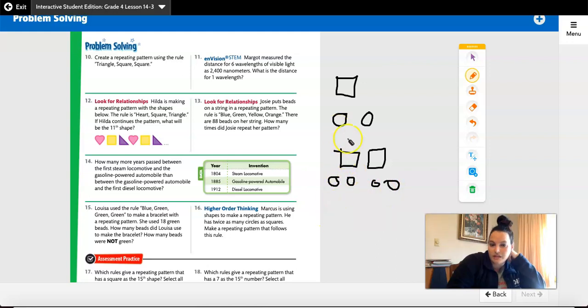So you could have made a circle, square, circle pattern. You could do square, circle, circle. You could do circle, circle, square. If you chose one of those patterns, you are correct.